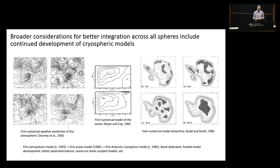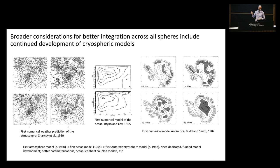I want to finish with a bit of historical perspective. The first atmosphere model was produced just after the war in the early 1950s. The first ocean model was in the mid-1960s. The first numerical model of Antarctica was produced in the early 1980s — so there's about a 15 to 20-year offset in development across these spheres, and that hierarchy still exists today. The point is we need dedicated, funded model development — money and time put into better parameterisations and particularly into how to couple across the different spheres, including perhaps the cultural sphere too.